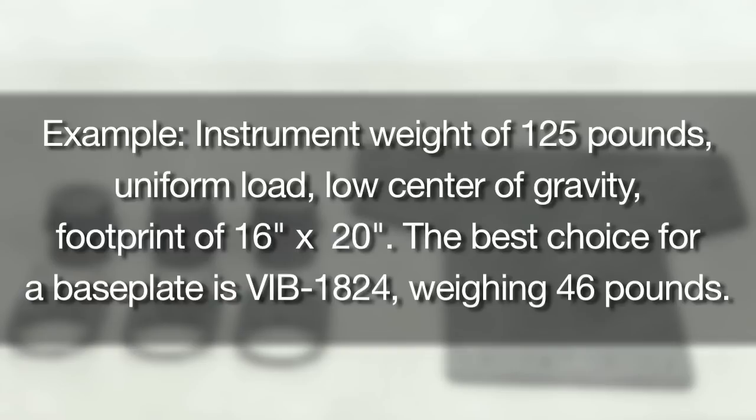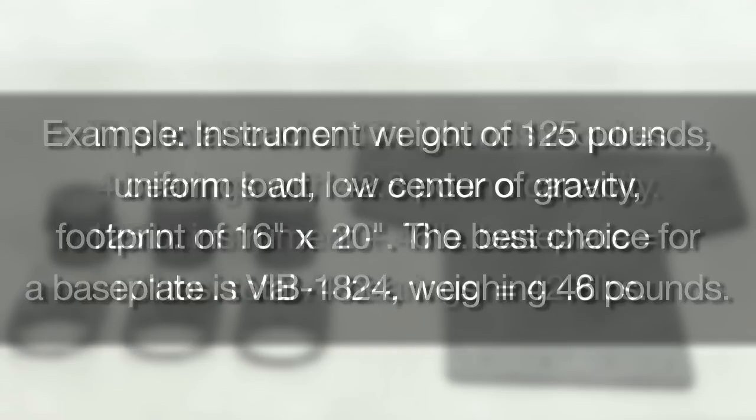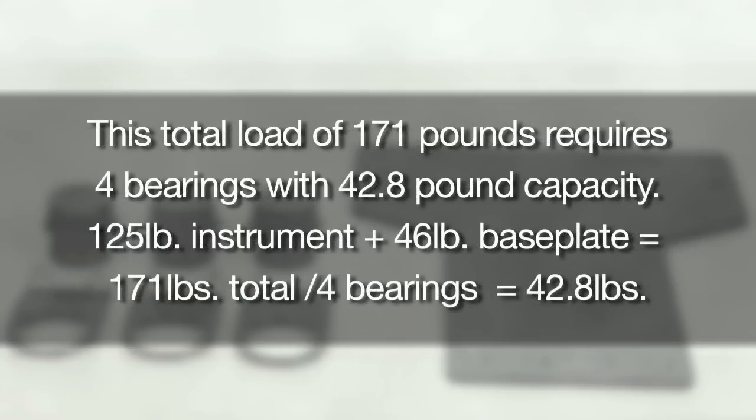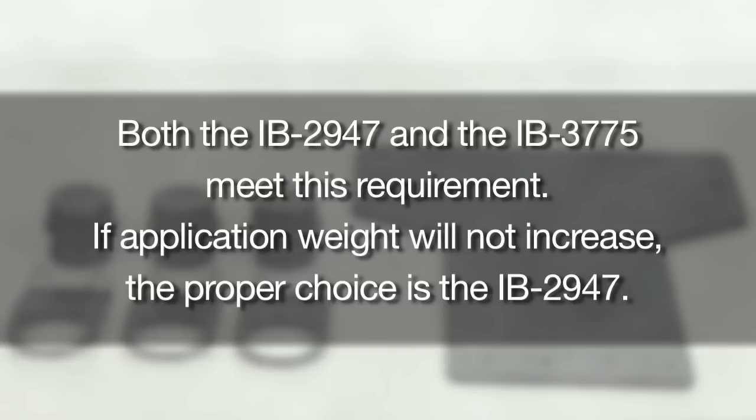To support this total 171-pound load, you would need four bearings with a minimum capacity of 42.8 pounds each. If there's more than one IB bearing available in the required range, choose the IB for which the payload falls closest to the middle of the range. In this example, both the IB-2947 and the IB-3775 would work. If the load for the application is not expected to increase, the proper choice would be the IB-2947.